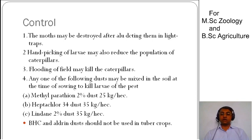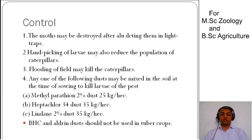The field can also be controlled through proper tillage, which exposes the larvae and pupae to natural predators and sunlight. For chemical control, dusting with methyl parathion at 25 kg per hectare can be done. We can also use Heptachlor dust at 35 kg per hectare, or BHC and aldrin dusts.